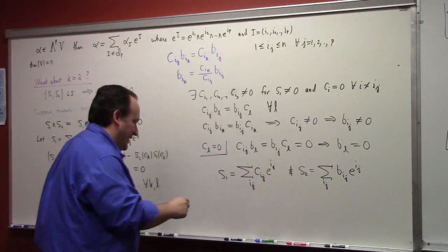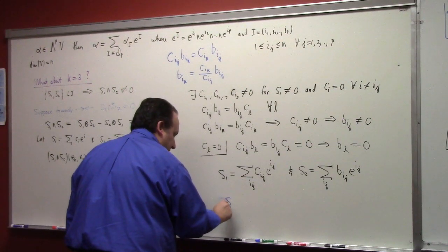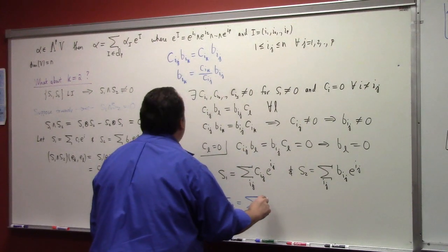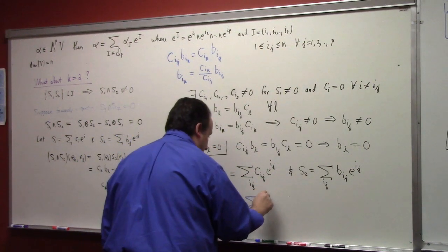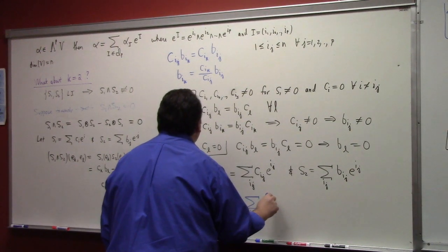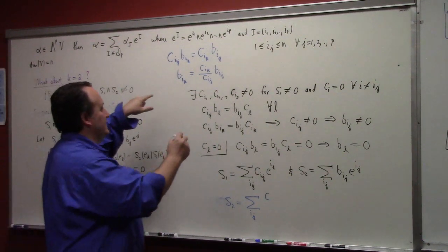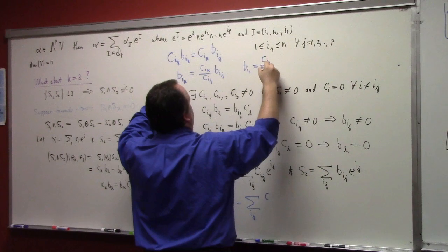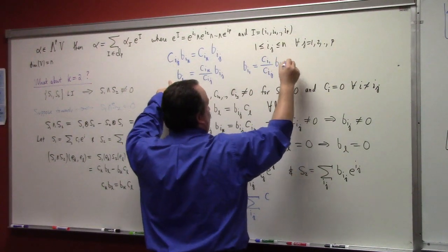I can just plug these into there, right? So if you've got S2 is equal to the sum over these indices, and my B, I can solve that. More to the point, if you've got B I 1 is equal to C I 1 over C I J, B I J, right? But that is, that's true for all J.